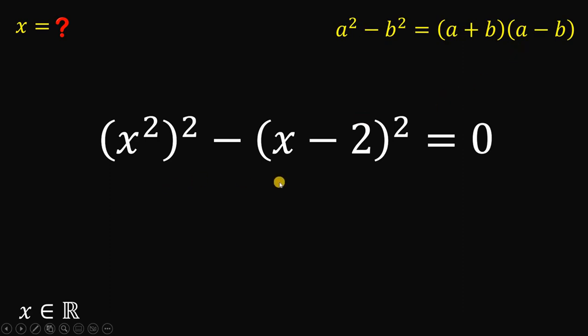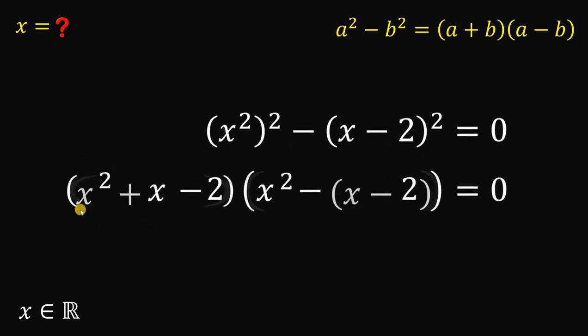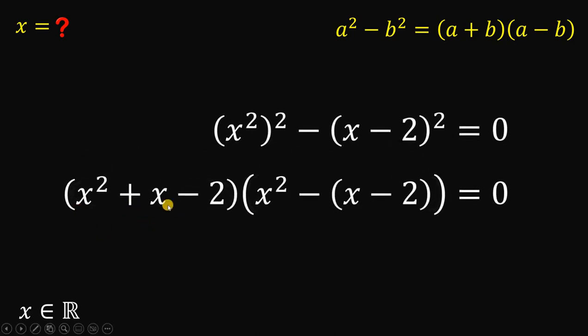So, we can factor the left-hand side as follows. So, we have x squared plus x minus 2 multiplied by x squared minus x minus 2. So, this is just applying the difference of two squares.